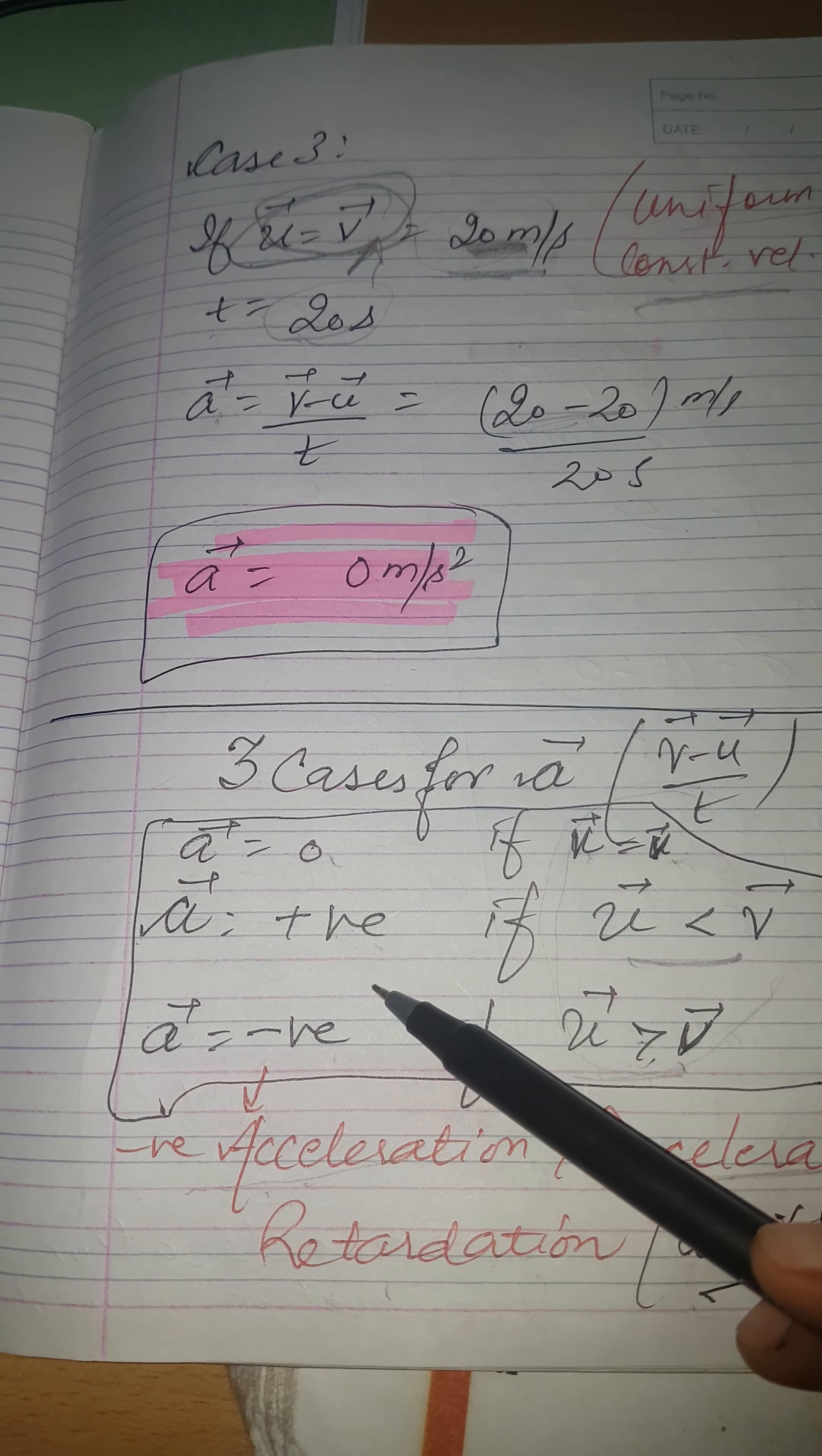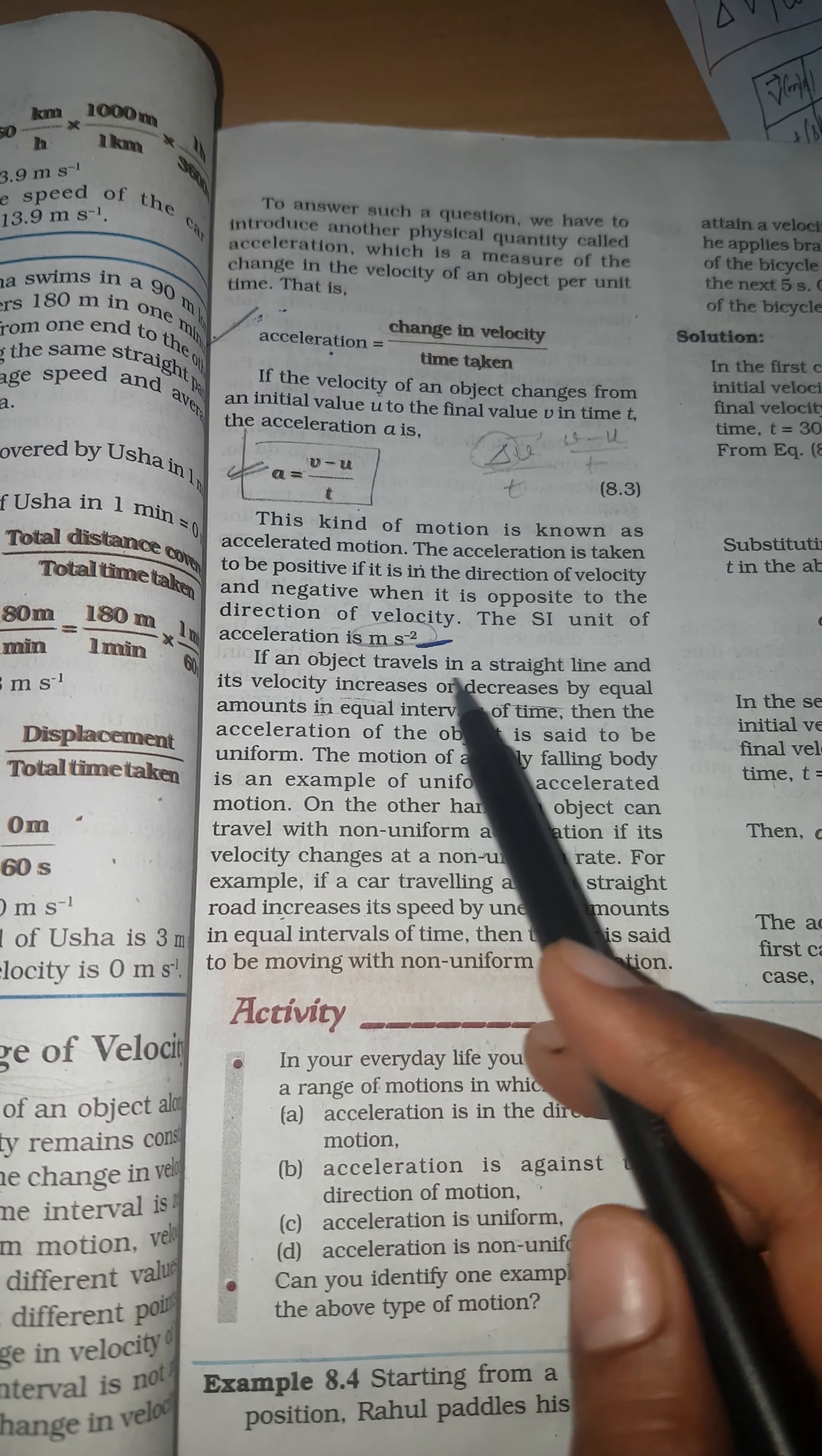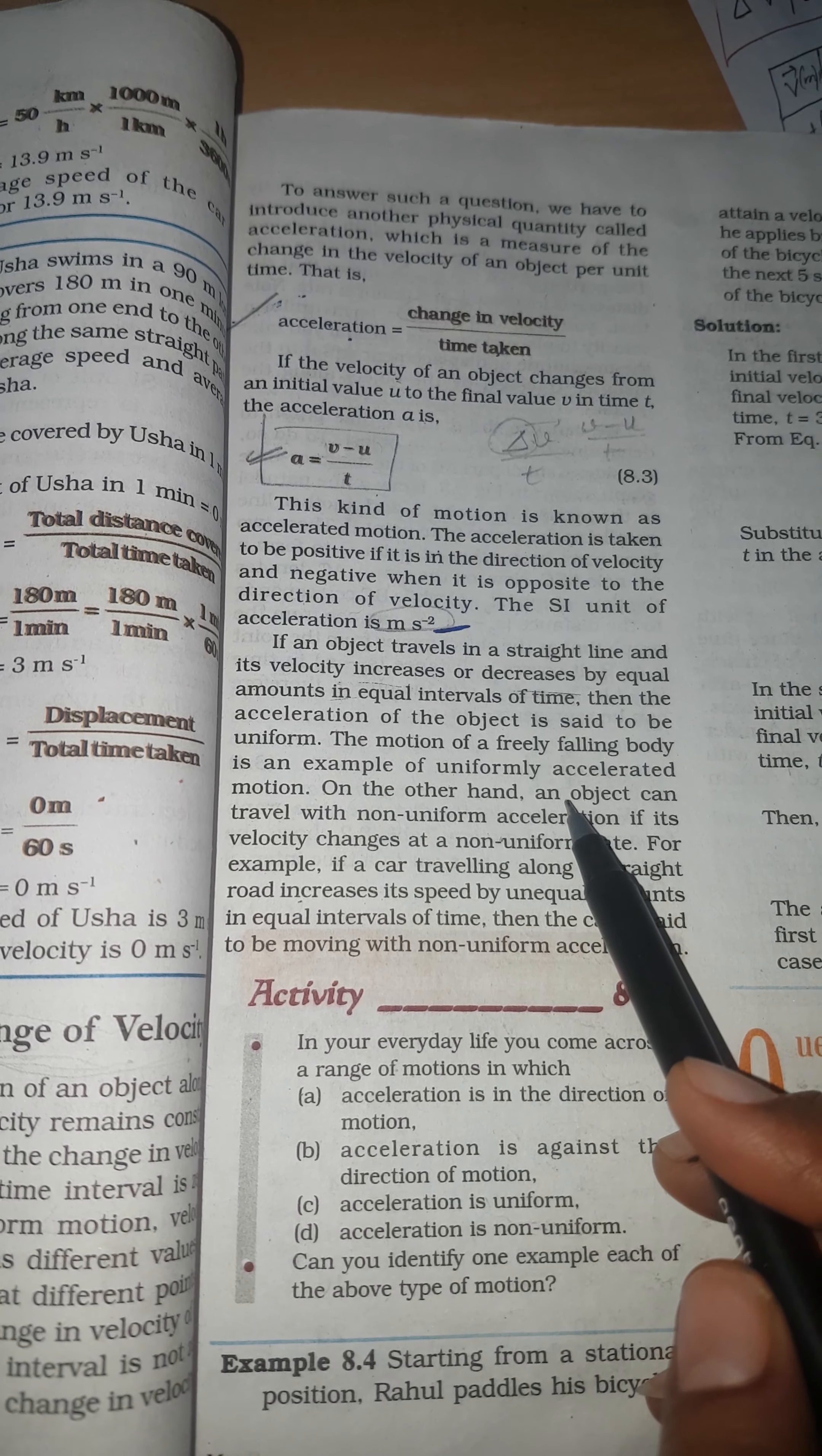Before starting the video main content, let me start with definition of uniform and non-uniform acceleration, then we are going to discuss uniform and non-uniform retardation. If velocity increases or decreases by equal amounts in equal interval of time, then acceleration of the object is said to be uniform. If velocity is increasing or decreasing, then we call it uniform acceleration or uniform retardation.